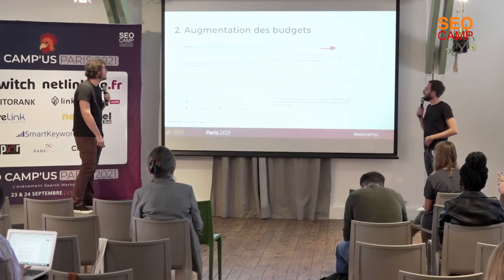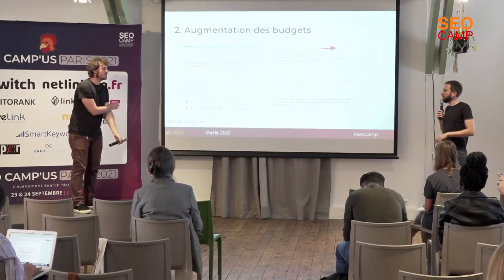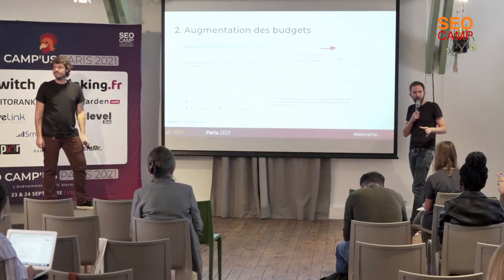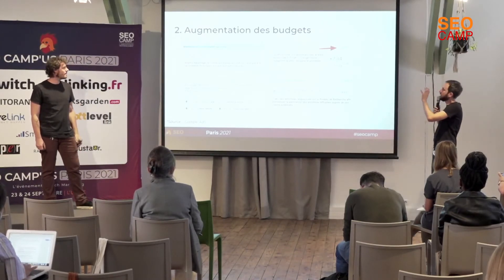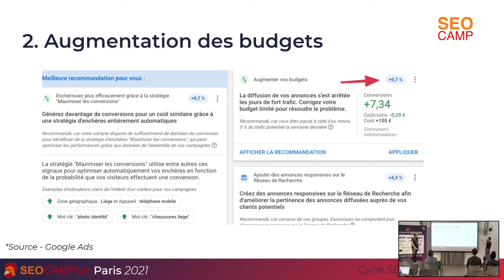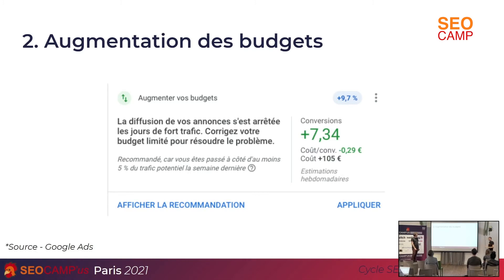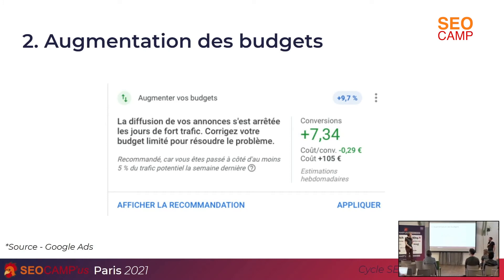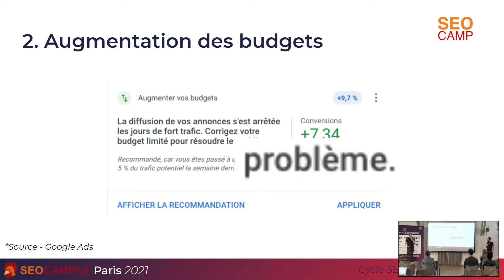Une autre recommandation : l'augmentation des budgets. Dans le scoring de 100%, ça représente un dixième. Si vous augmentez le budget, un dixième de votre score sera bon pour optimiser votre compte. Quand Google détecte qu'une campagne est limitée par le budget — on dépense tout le budget quotidien avant la fin de la journée — il considère que c'est un problème. La première chose qu'il met en avant, c'est évidemment d'augmenter vos budgets.